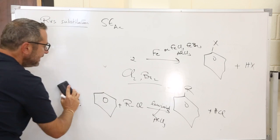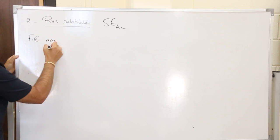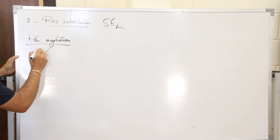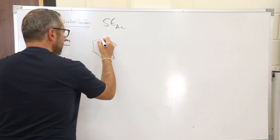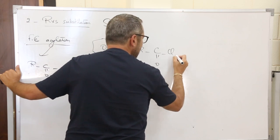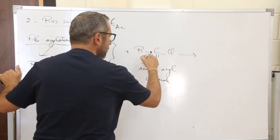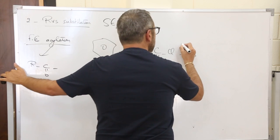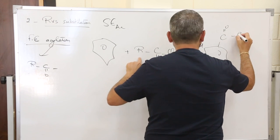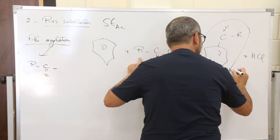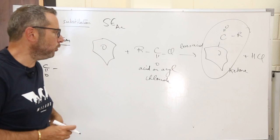We move now to Friedel-Crafts acylation (F-C acylation). Instead of placing the alkyl group R, we place the acyl group R-C=O. We take benzene and react it with an acyl chloride R-C(=O)-Cl — not RCl — along with a Lewis acid like AlCl3. We obtain benzene-C(=O)-R plus HCl. This reaction gives a ketone, specifically an aromatic ketone since the R here is benzene.